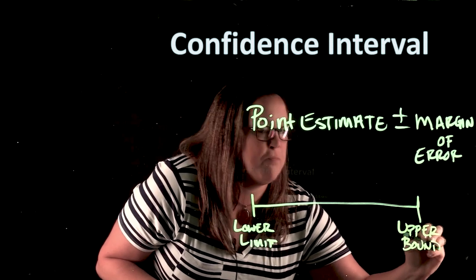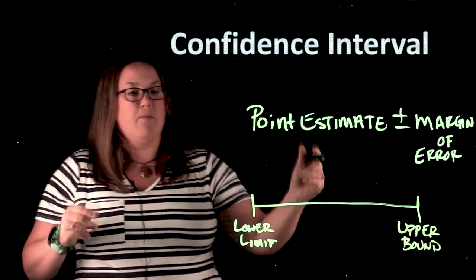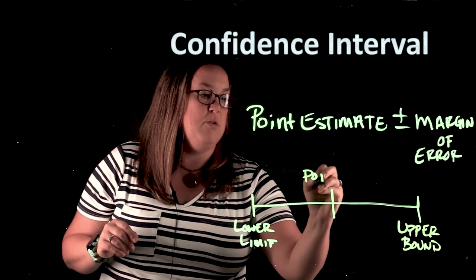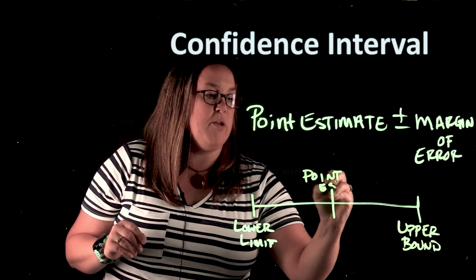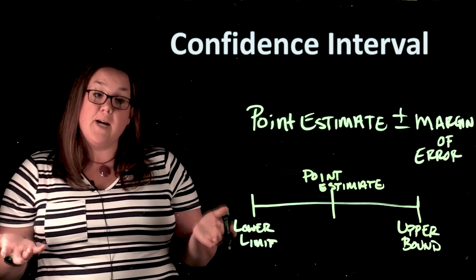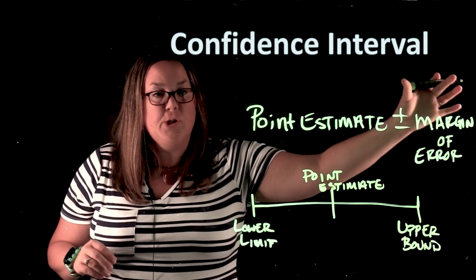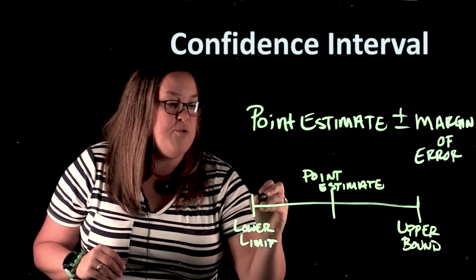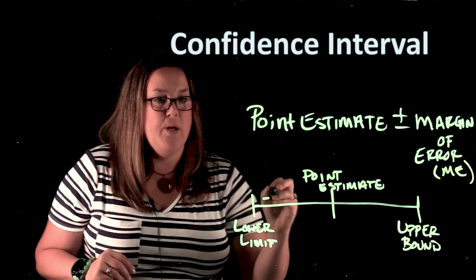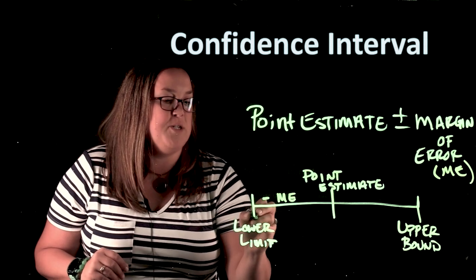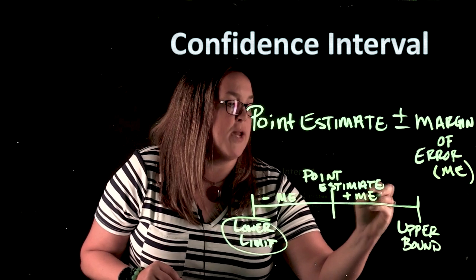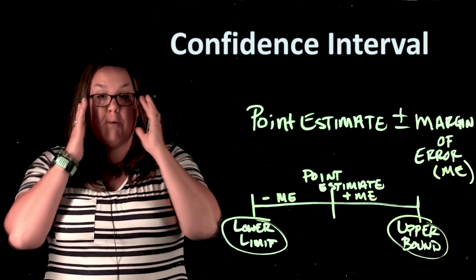Essentially, those are the same thing. And because of the format of the confidence interval, you'll always have your point estimate exactly in the middle. So once you calculate it, the point estimate will be exactly in the center. Because what you do is take that margin of error measurement — usually shortened to ME — and you subtract the margin of error from your point estimate to get your lower limit, or you add a margin of error to your point estimate to get your upper limit or upper bound.